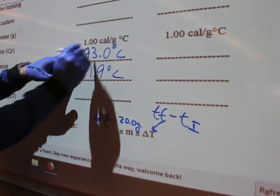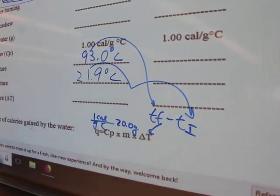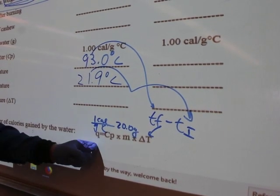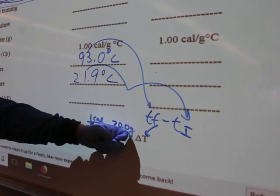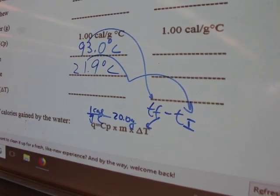The ΔT is T final minus T initial. Your T final here is 93.0 degrees, T initial is right here, and you find the quantity of heat by multiplying 1 times 20.0 times the difference between these two values.